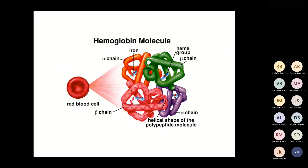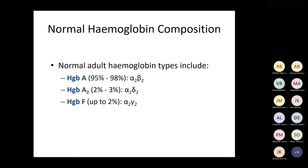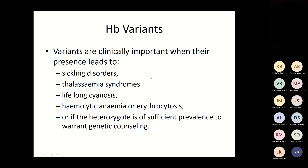We have normal haemoglobin composition: adult haemoglobin A, haemoglobin A2, and haemoglobin F. Normally 98% is haemoglobin A, 2–3% is A2, and up to 2% is F. We have different types of variants and their presence can lead to sickling, thalassaemia syndrome, lifelong cyanosis, haemolytic anaemia, erythrocytosis, or if heterozygous, may warrant genetic counselling.